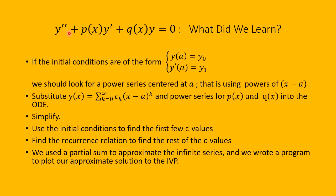In summary, for the ODE y'' + p(x)y' + q(x)y = 0 with initial conditions y(a) = y₀ and y'(a) = y₁: look for a power series centered at a using powers of (x−a); substitute into the ODE along with power series for p(x) and q(x); use initial conditions to find the first c values; find a recurrence relation for the rest; and use software like Python, SageMath, or MATLAB to compute a partial sum approximation and graph the solution.